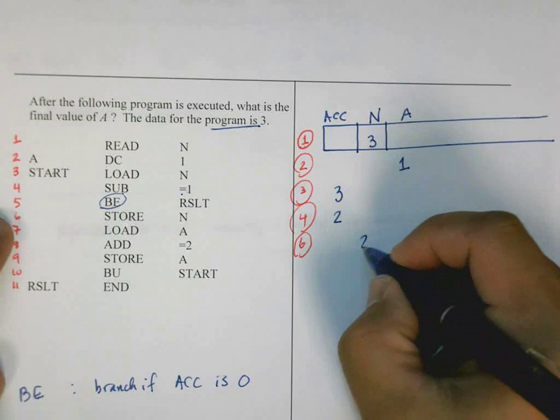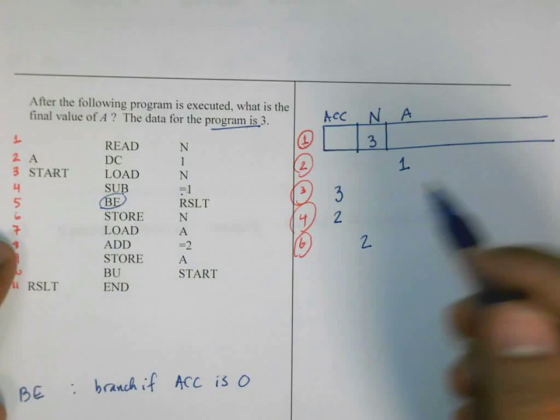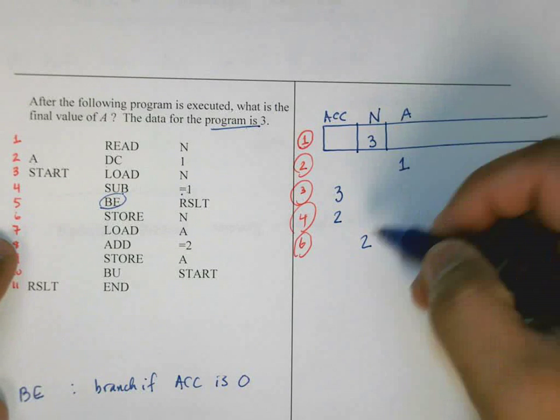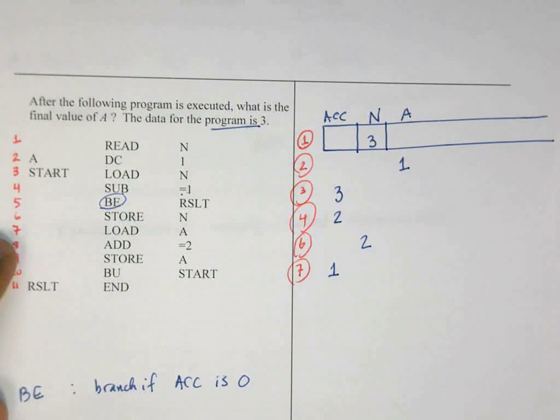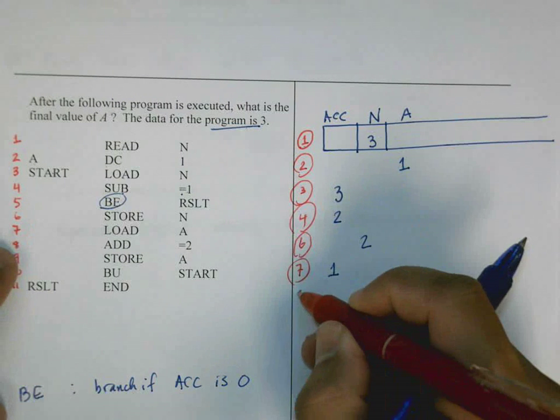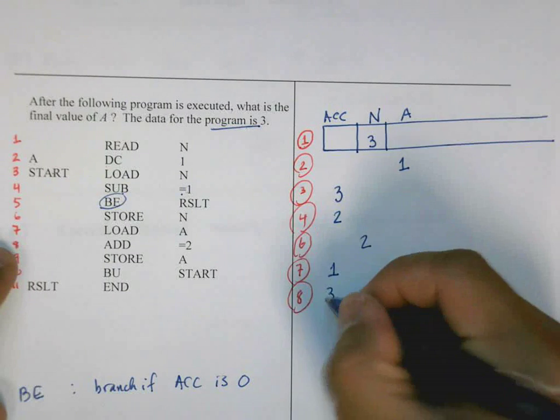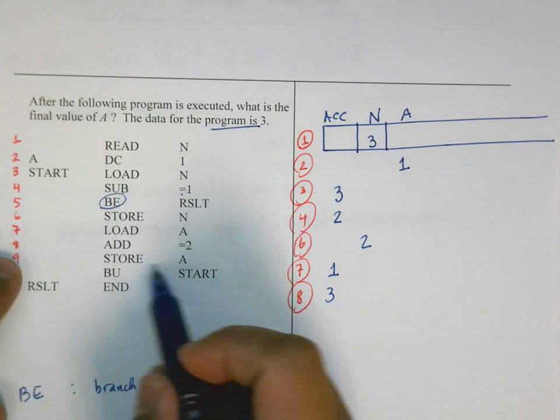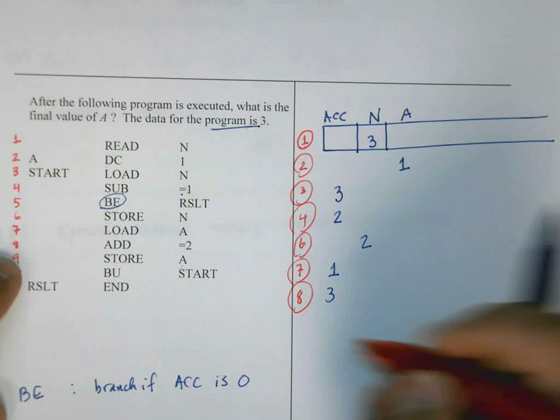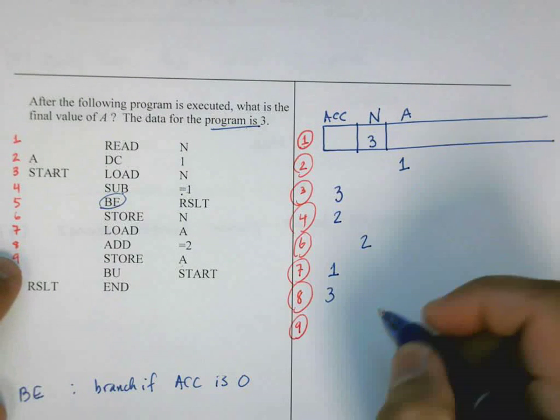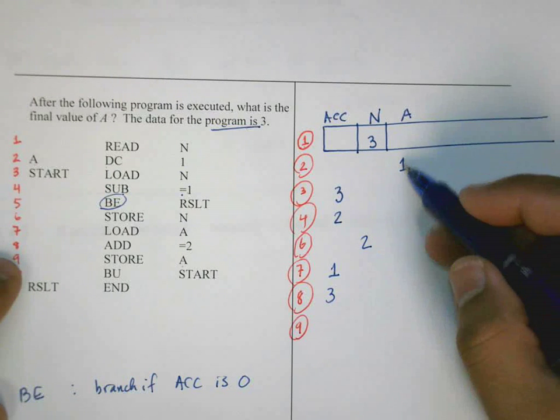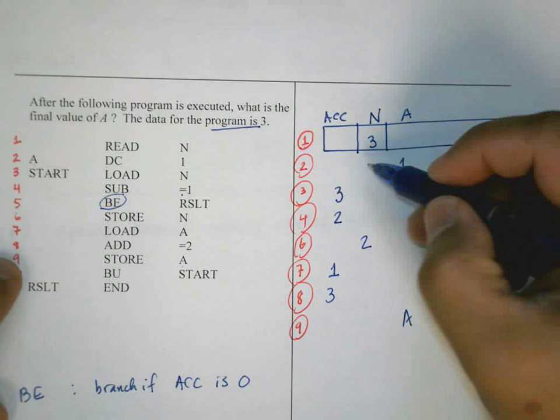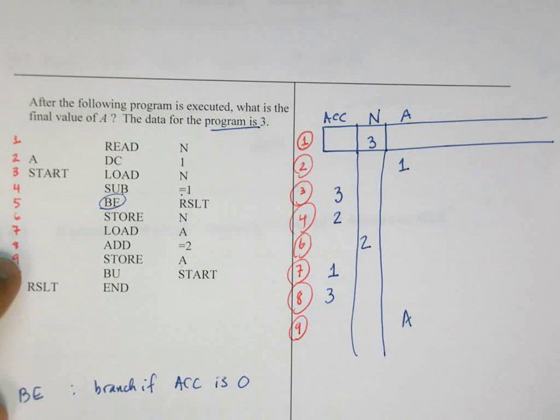Again, line five does nothing, at least in this iteration. So N has two. Line seven. Load A. Whatever is in A, put that into the accumulator. So now the accumulator has a one in it. Add two to the accumulator. So after line eight, the accumulator now has a three in it. Store A. So take whatever is in the accumulator and put it in A. So this is line nine.